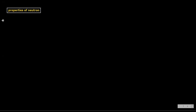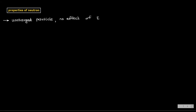First property: as we discussed yesterday, it is an uncharged particle, and that's why there is no effect of electric field or magnetic field on neutrons. I am writing it in short form — EF for electric field and MF for magnetic field.